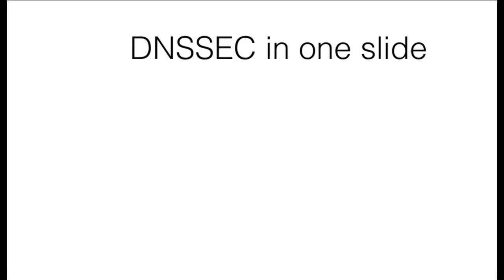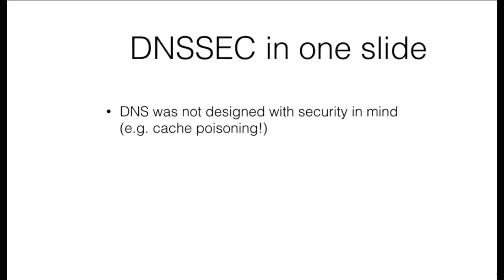Let's start with a brief introduction on what DNSSEC is. As you have learned in the lecture on DNS cache poisoning, DNS is a protocol that was not designed with security in mind. An attacker can easily falsify information in the DNS, thus potentially misleading large numbers of users that depend on the DNS to find, for instance, the IP address of their bank's website.